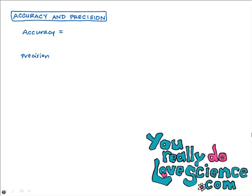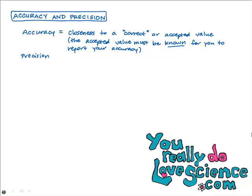Accuracy tells how close your measurement is to the correct or the accepted value. Accuracy is closeness to a correct or an accepted value, and the accepted value must be known for you to report on your accuracy. For example, if you're doing a lab and you measured the mass and volume of a metal to calculate its density, you can't report on the accuracy of your density calculations unless your teacher tells you the accepted value for the density of that metal. Then you can say your measurement was accurate or not so accurate. So accuracy is really about being right or wrong.